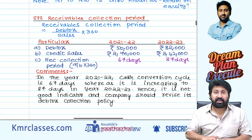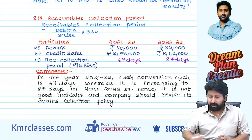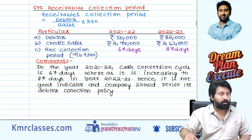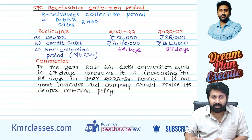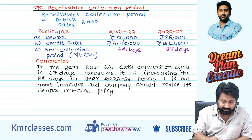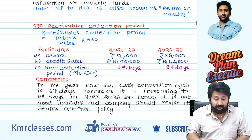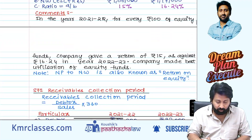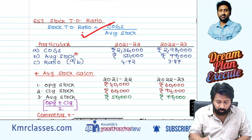Receivables collection period: debtors by sales into 100. Receivables collection period is also called debt collection period — expressed in number of days: debtors divided by sales into 360. If they ask debtor turnover ratio, then you do sales divided by average debtors, or COGS divided by average debtors depending on the type of question.